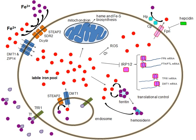Human iron metabolism is the set of chemical reactions that maintain human homeostasis of iron at the systemic and cellular level. Iron is both necessary to the body and potentially toxic, and controlling iron levels in the body is a critically important part of many aspects of human health and disease.